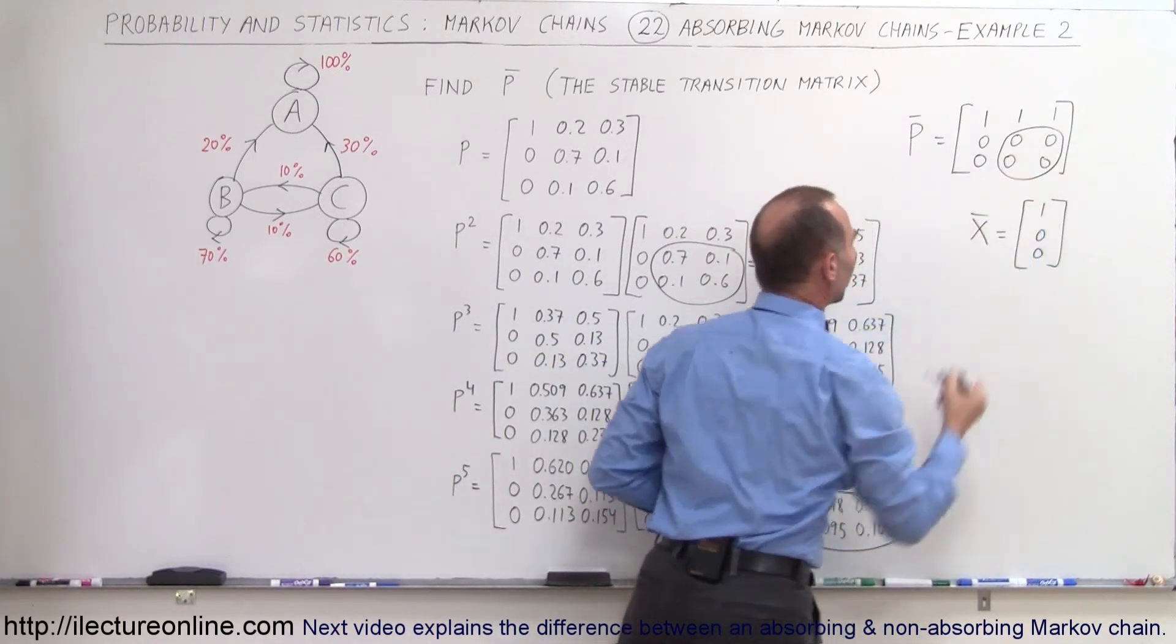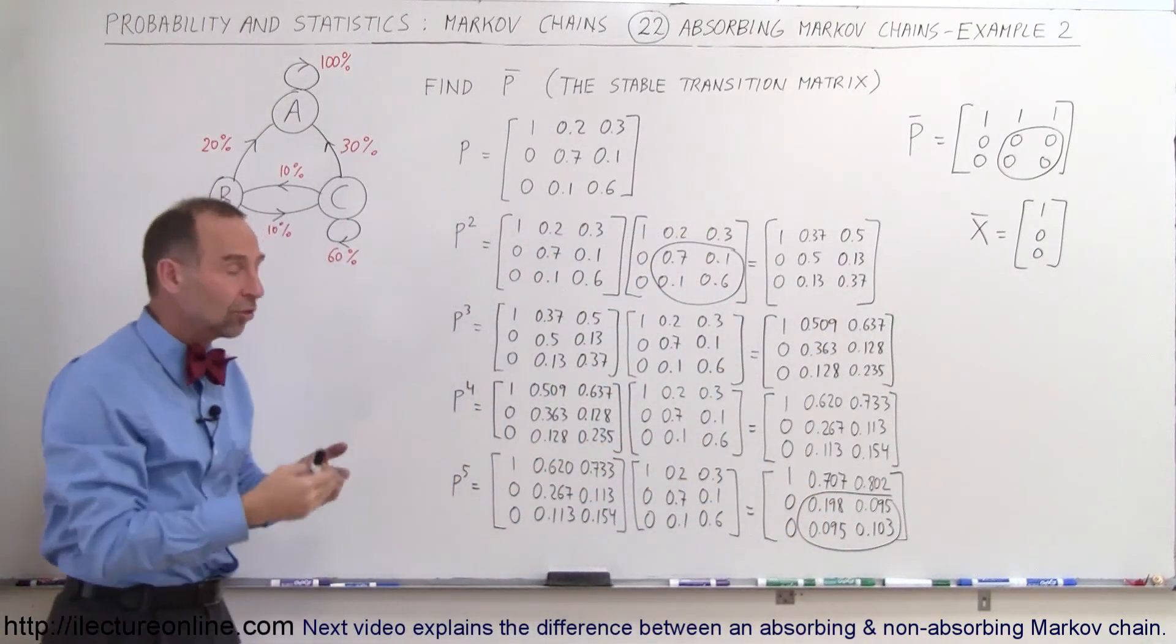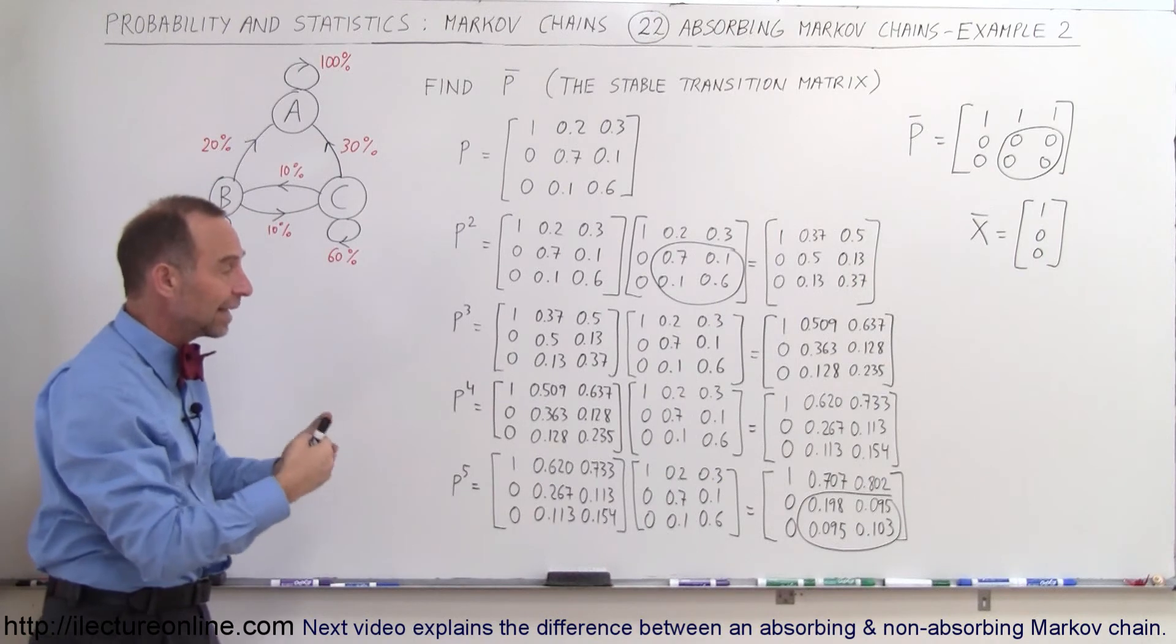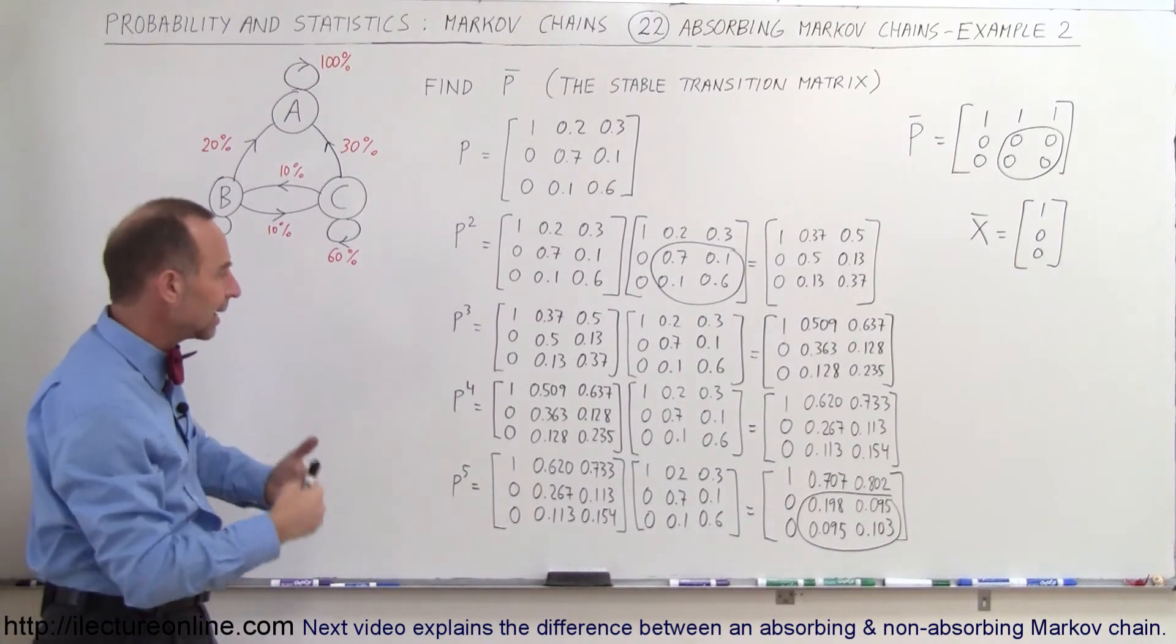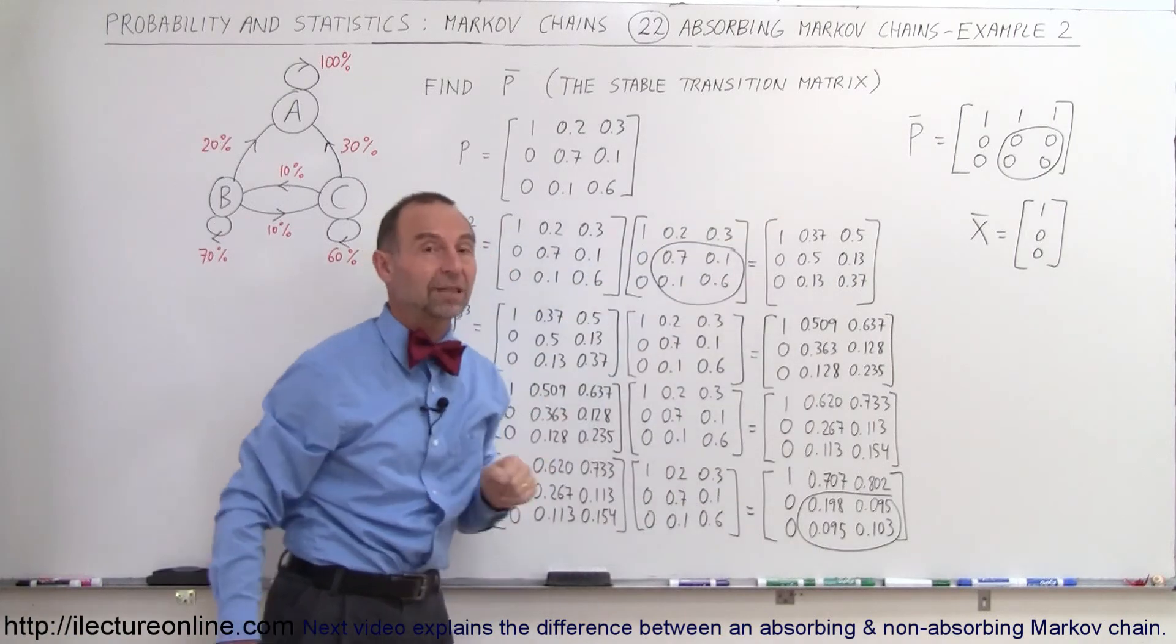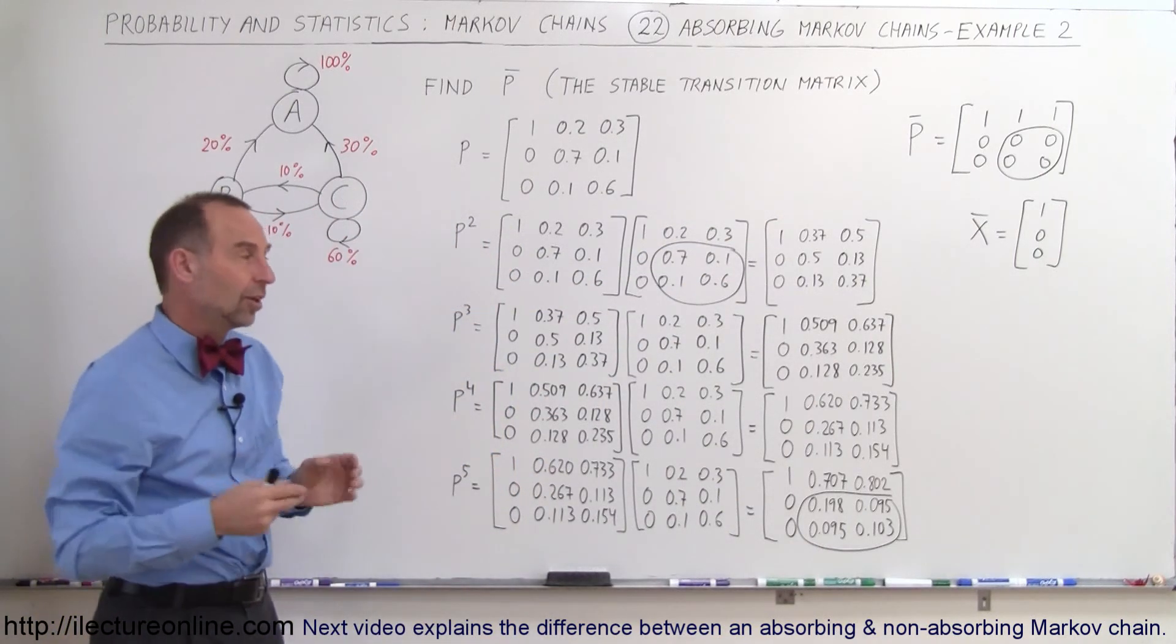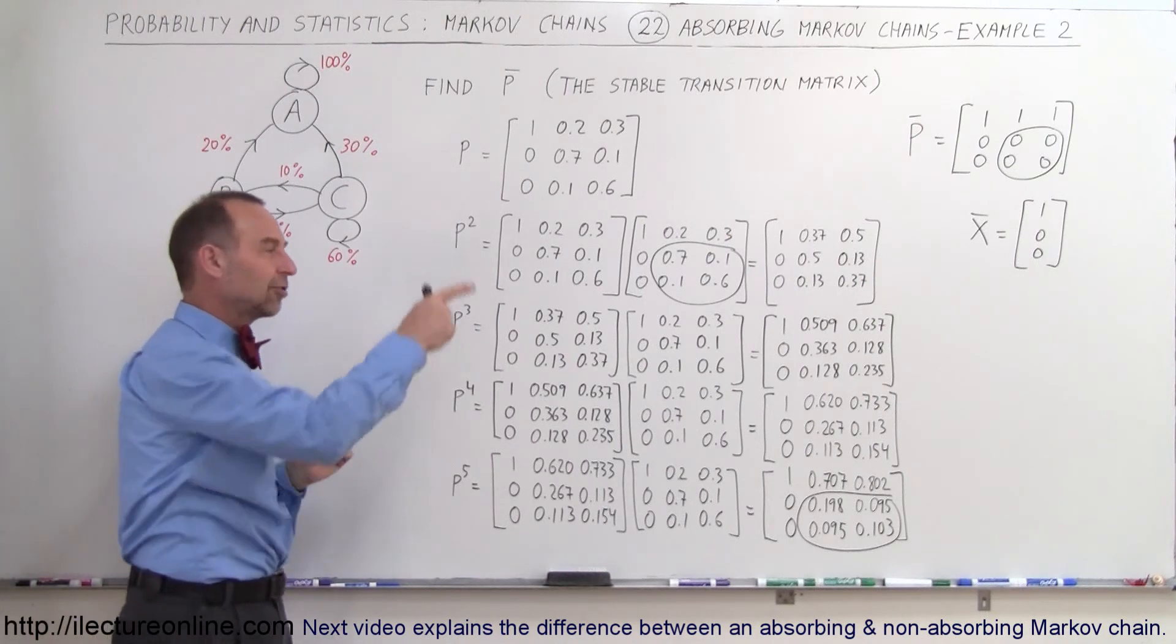So it does look like as we continue to multiply the transition matrix by itself and continue to take that result and multiply it again and again, we can see that eventually we tend to converge to what we're expecting to see. Now again, since we know that's the case, we have a shortcut method to actually calculate that in a much better way, and I'll show you that in a future video.